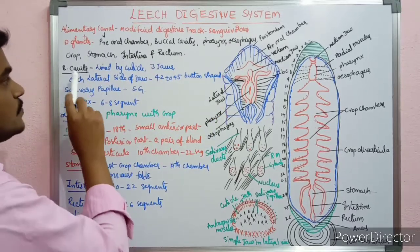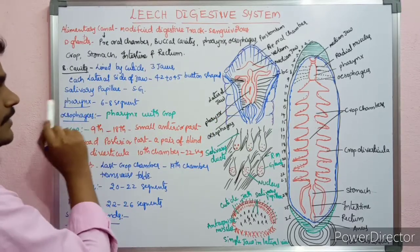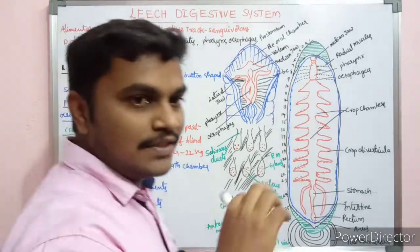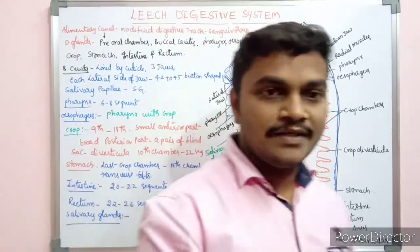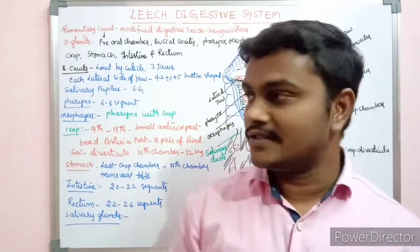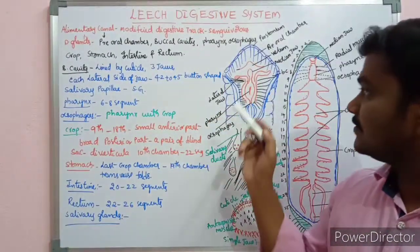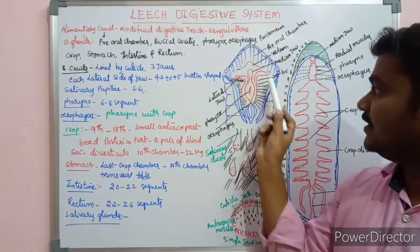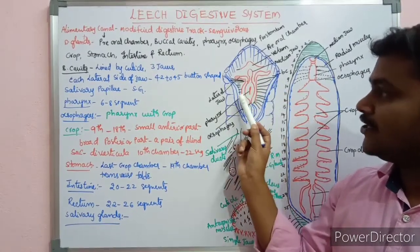First and foremost, we consider the buccal cavity. The buccal cavity is lined by cuticle in the area of the buccal cavity. It is lined by cuticle.